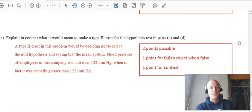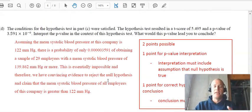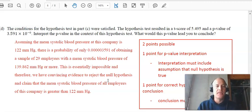Explain in context what you would mean by type two error. So a type two error in this problem would be deciding not to reject the null hypothesis and saying that the mean systolic blood pressure of employees in this company is not over 122. When in fact, it's greater than 122. Now, it should be noted that on the previous question, it's possible that we committed a type one error. So I think a better follow up question would have been what type of error could you have committed with this P value? And you would say the type of error is a type one where we reject the null, but it's actually not false.